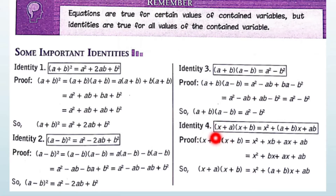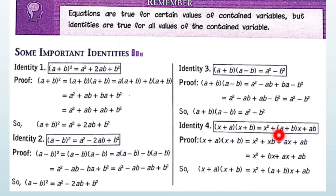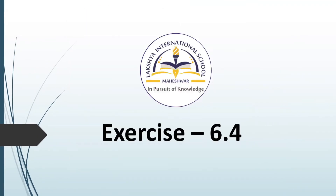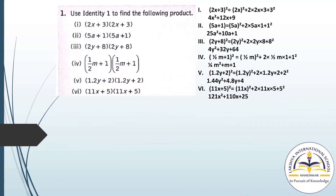Identity 4 is also given here: (X + A)(X + B), where there is one different variable X. The result is X square plus (A + B)X plus AB. This will be the identity. On the basis of this identity, we will solve exercise number 6.4.